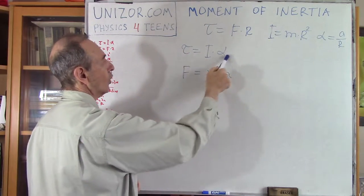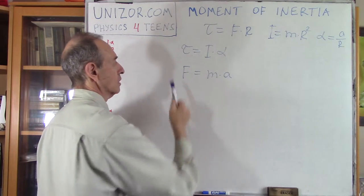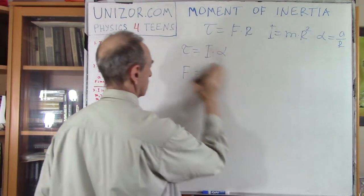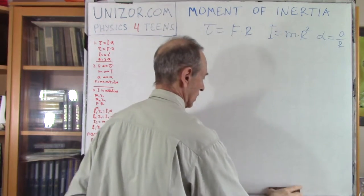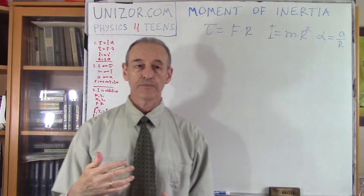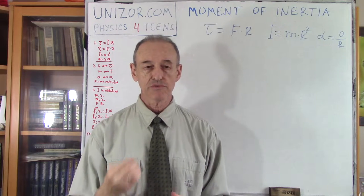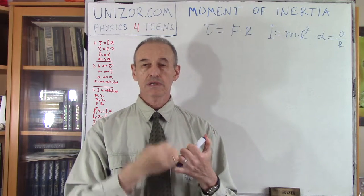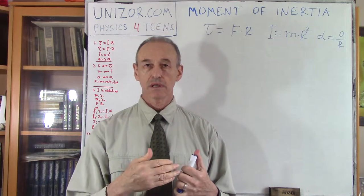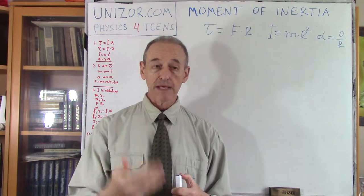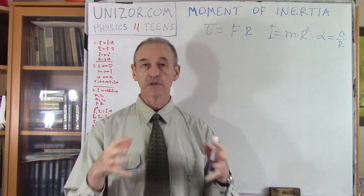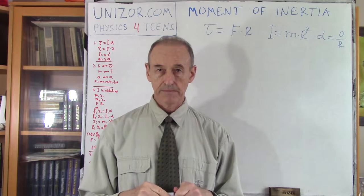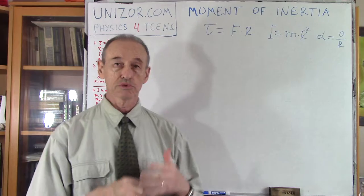Today we will talk about I — the moment of inertia. Since it is an equivalent of mass, let me point out something very important about mass. Mass is additive, meaning the mass of two different objects equals the sum of the masses of each. That allows us to calculate the mass of a real solid object as the sum of the masses of all the tiny pieces it consists of.